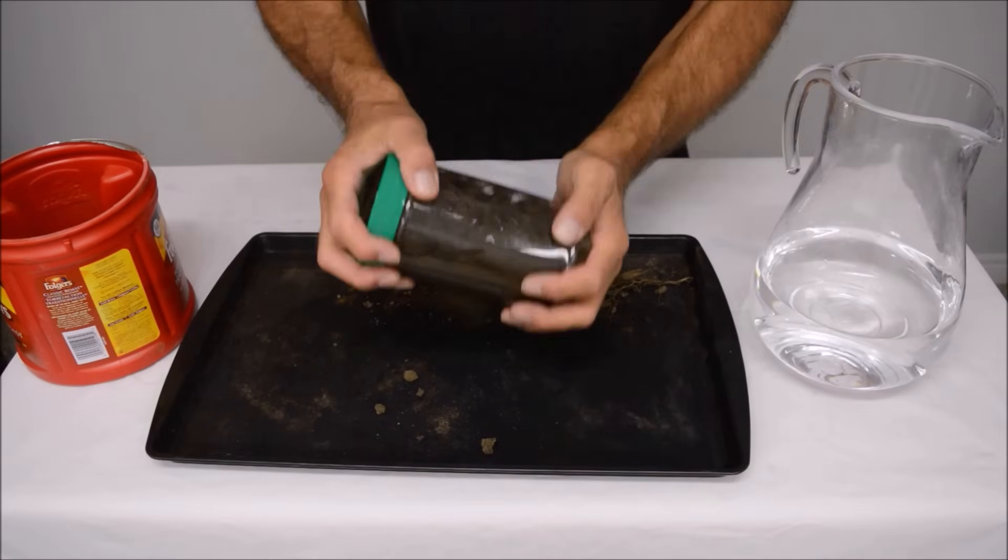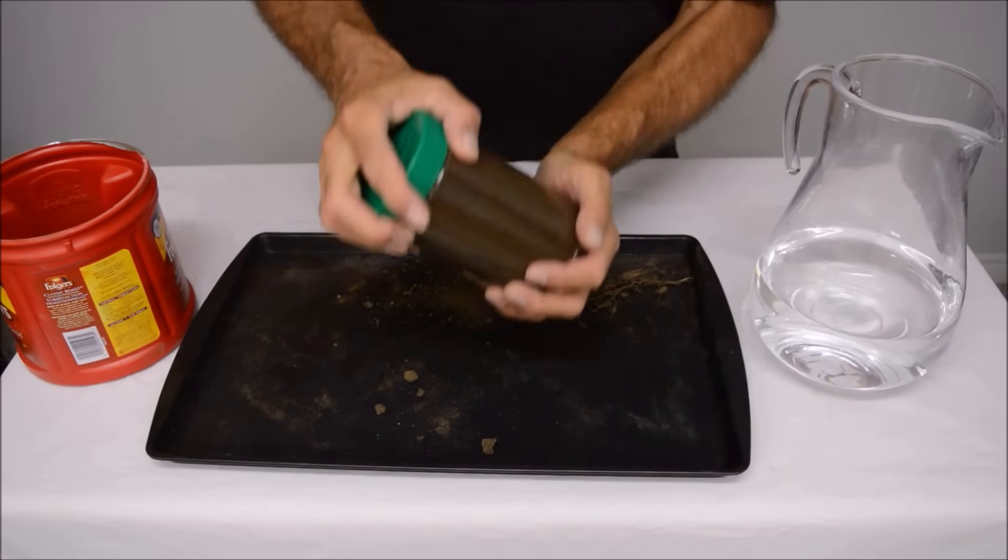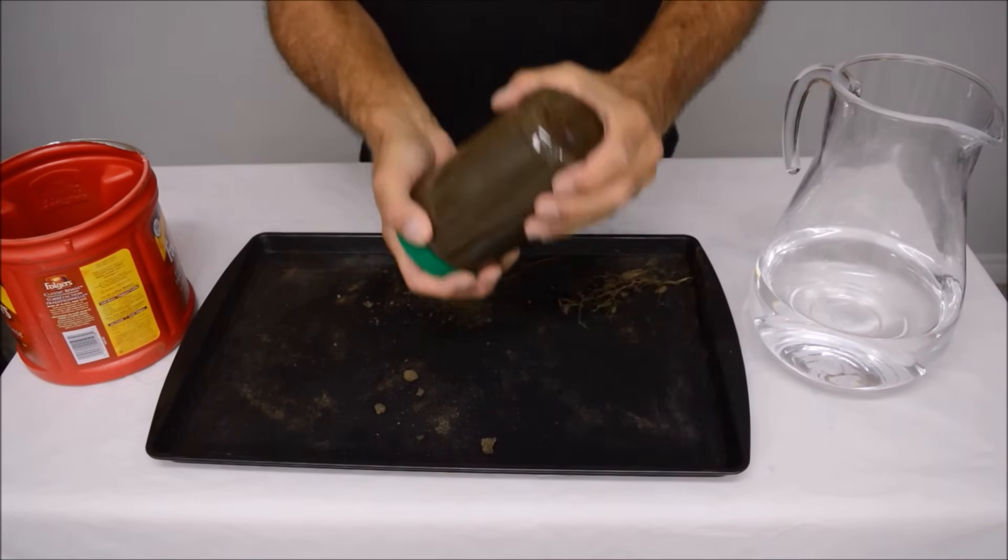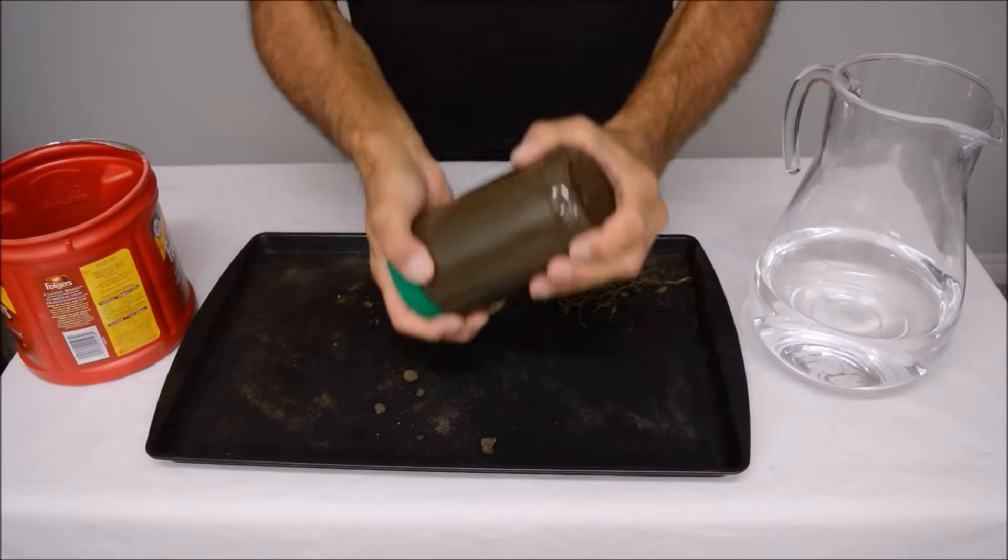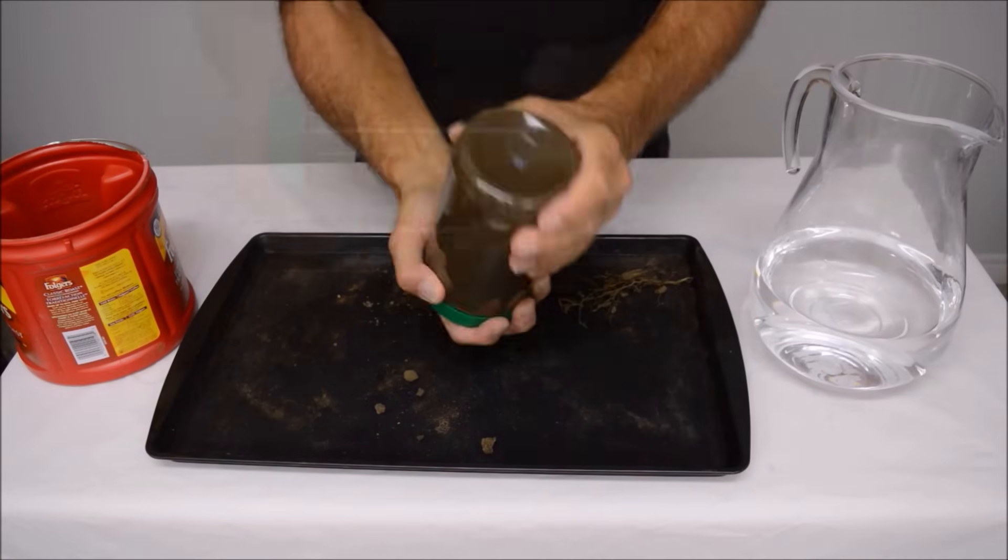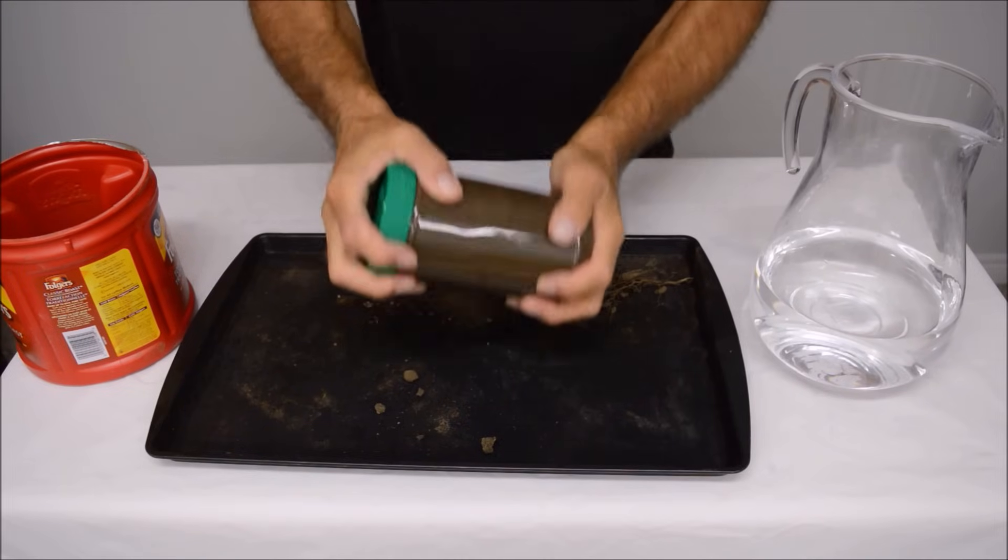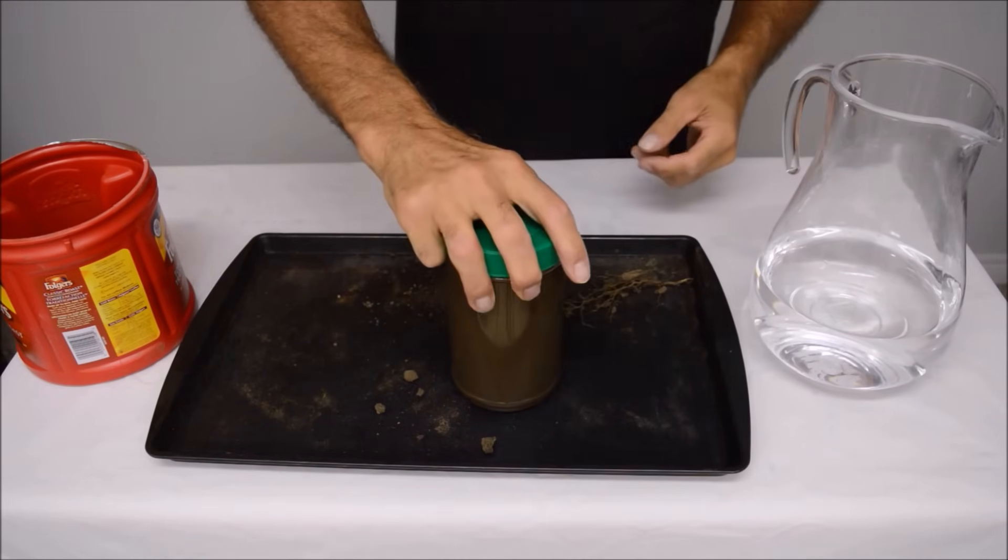Place the lid on the jar and then shake. You want to mix it well so that all of the soil is broken up into individual particles. Turn the jar over and make sure all of the soil is freed from the bottom. You can also use a stir stick or spoon and really give it a good mix.